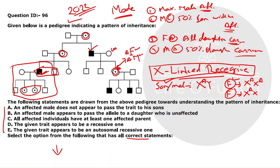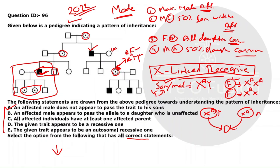Once we know this is X-linked recessive, we can evaluate the statements. Statement A: 'An affected male does not appear to pass the trait to his son' — correct, because in X-linked inheritance, the father provides only the Y chromosome to his son. Statement B: 'An affected male appears to pass the allele to a daughter who is unaffected' — also correct, because the daughter must receive her father's affected X chromosome and would only be affected if she also received an affected X from her mother.